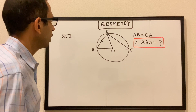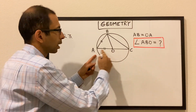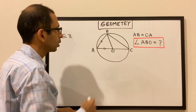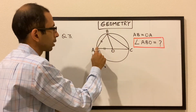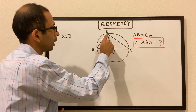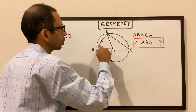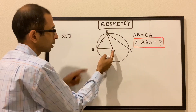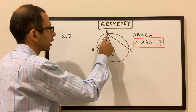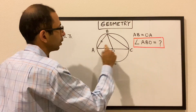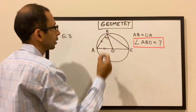Let's move to question number 3. We have a circle with center O, and AC is the diameter passing through center O. There is a point B on the circle such that AB is equal to OA — so this length is equal to this length — and we have to find the measure of angle ABO.